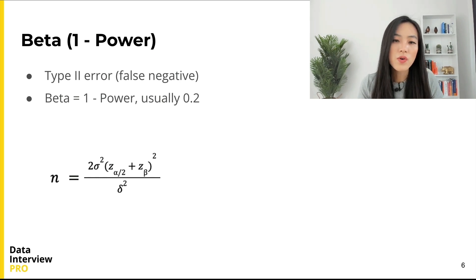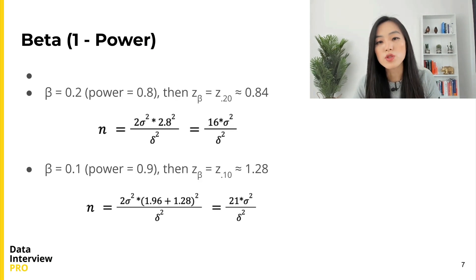As our sample size increases, the more information we have, our uncertainty decreases, and we have greater confidence in our estimation. Now let's look at how β impacts sample size. β is Type II error; it's equal to 1 minus power.